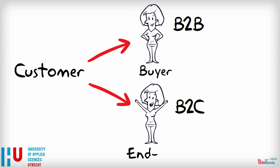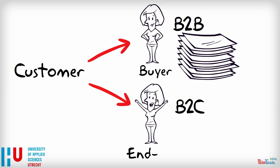Generally speaking, a buyer is the person who pays the invoice and an end user is the person who consumes the service or product. In B2C markets, that may or may not be one and the same person. In B2B markets, it's almost never the same person.